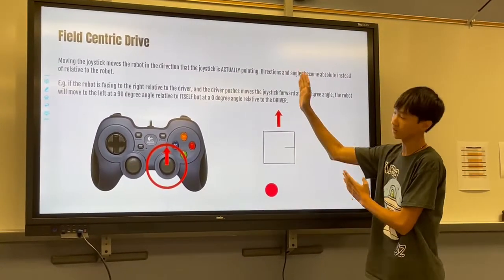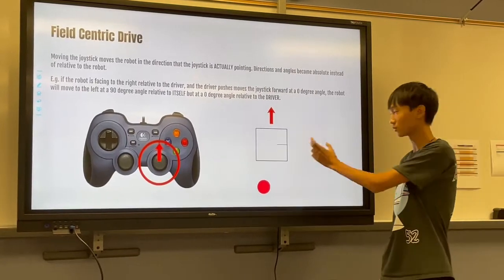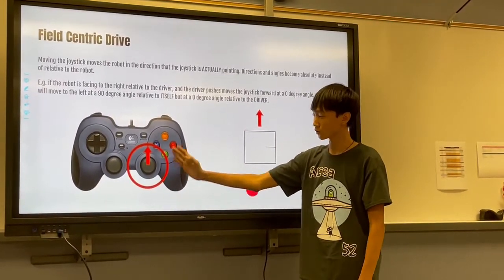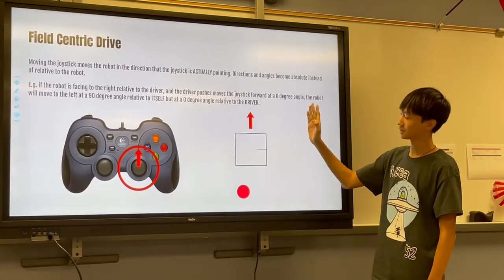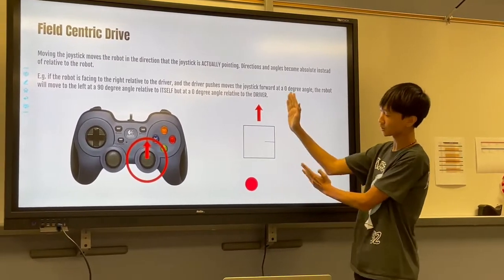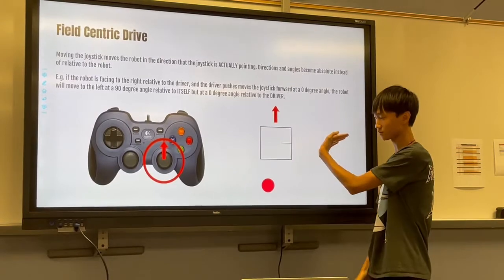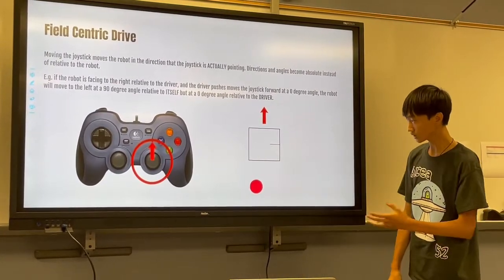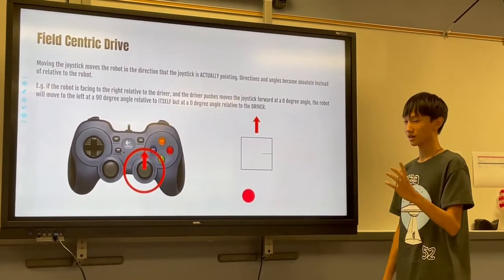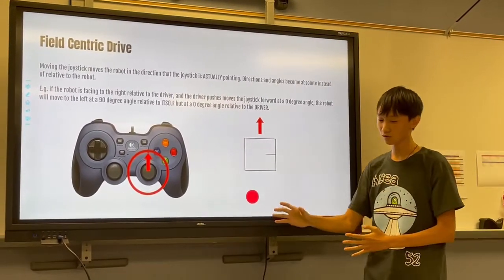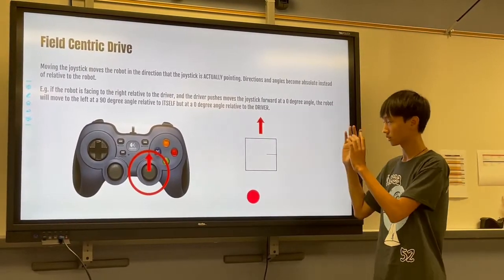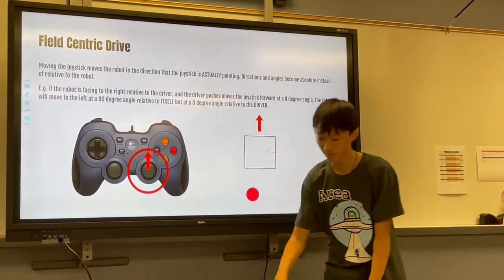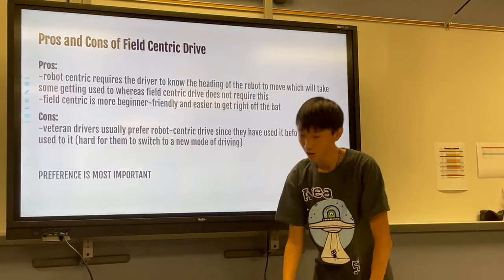If the driver was standing over here, the robot wouldn't be traveling forward from the driver's view. So what field-centric drive is: the robot travels forward in the direction of the driver instead of relative to itself. If you push the joystick forward, the robot will travel actually forward — not forward relative to the robot, but forward relative to what the driver is seeing.